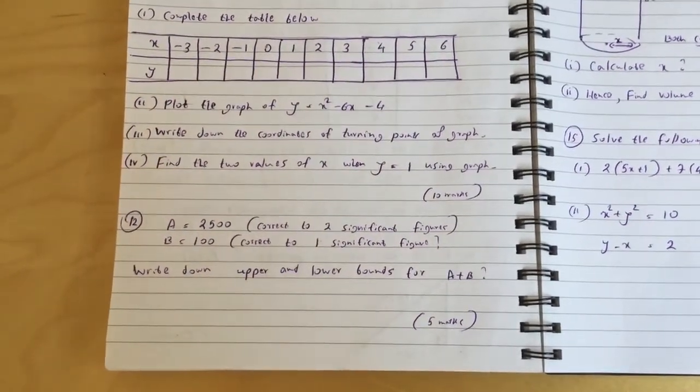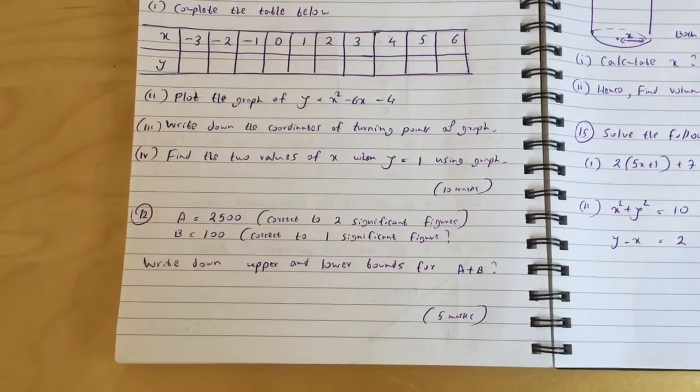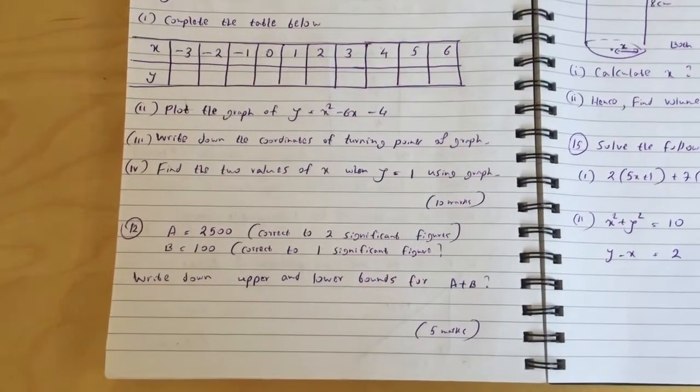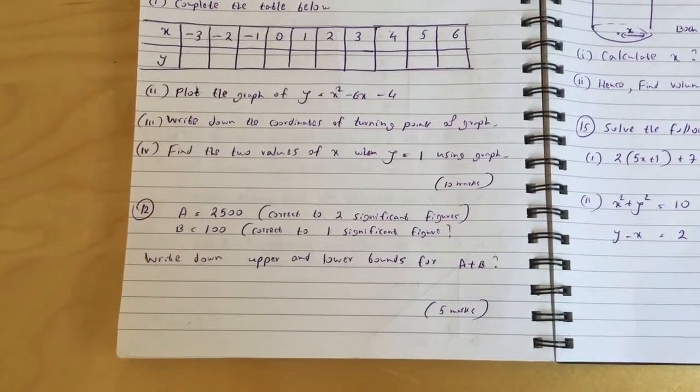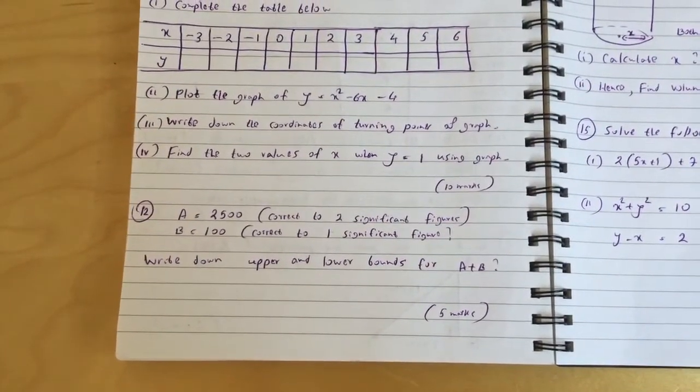Question 12: A is equal to 2500 correct to two significant figures. B is equal to 100 correct to one significant figure. Write down upper and lower bounds for a plus b.